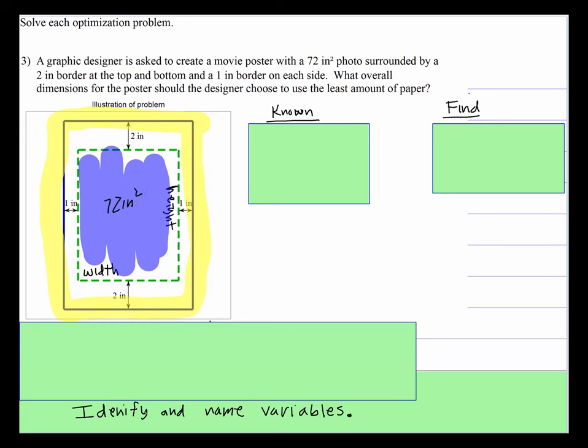One of the things that you need to do is identify and name variables. So the width is right here. I'm going to call that x. And the reason I named it x is because it is going horizontally like the x axis.